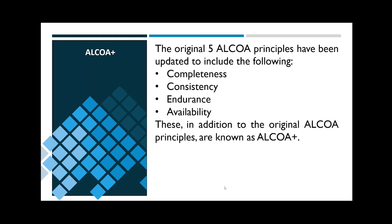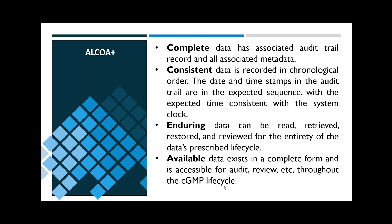Beyond the original ALCOA, there are four more data integrity principles — we call this ALCOA Plus. The four additional principles are completeness, consistency, endurance, and availability. Complete data has all metadata intact and has an associated audit trail record — there are no deletions. Consistent data is recorded in chronological order; all date and time stamps in the audit trail occur in the expected sequence and are consistent with the system clock. Enduring data may be read, retrieved, and reviewed for the entirety of the data's prescribed lifecycle, a period defined by the manufacturer in the SOPs. Available data exists in complete form and is accessible for audit and review throughout the prescribed lifecycle.